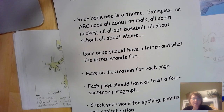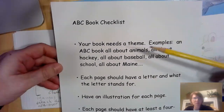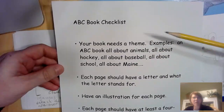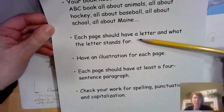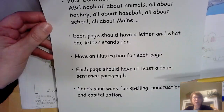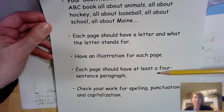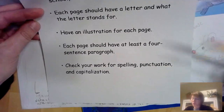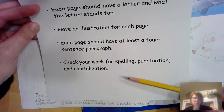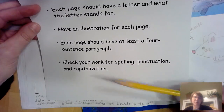So make sure you check in and look for instructions from your own teacher about that. Let's go over the expectations one last time so you can do a quick check. Make sure your book has a theme. Make sure each page has the letter and what the letter stands for. Have an illustration, and make sure you've written a four-sentence paragraph for each letter. Either as you're going or at the end, make sure you do a final check through for correct spelling, punctuation, and capitalization.